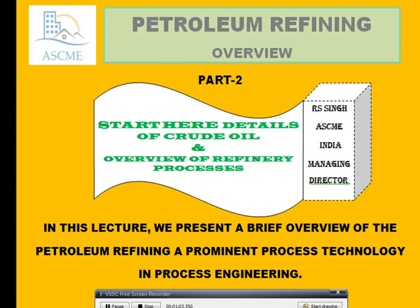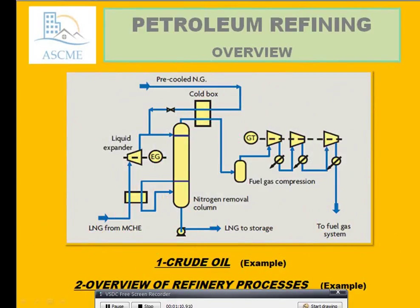In this lecture we previously discussed a brief overview of the Petroleum Refining and introduction to the technology in the process engineering. For Petroleum Refining, we have one scenario. This is just showing that after the visual study, which type of plant we are going to produce and store in the process. We put a type of plant like a refinery plant, pre-cooling, pre-cooled, and cold box.